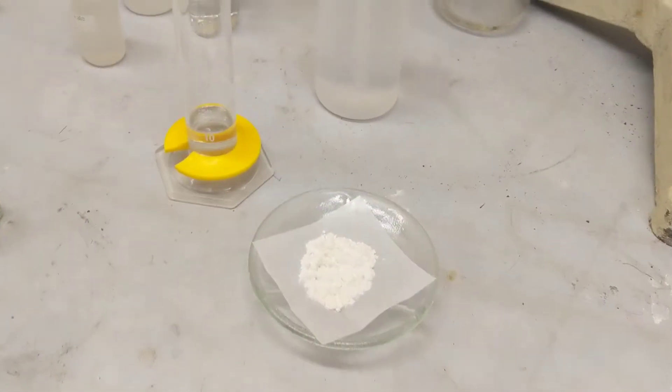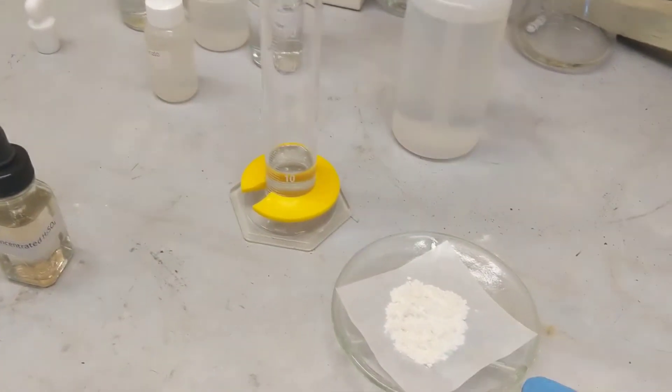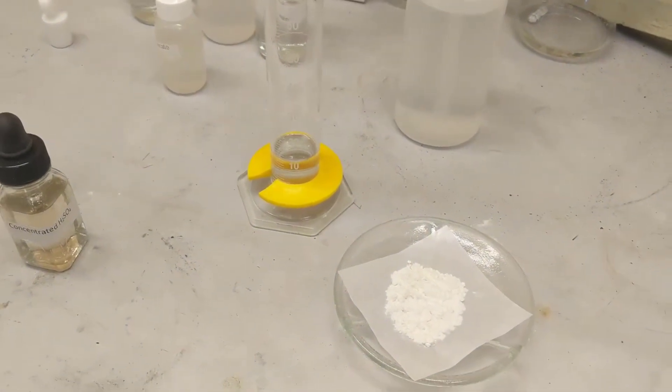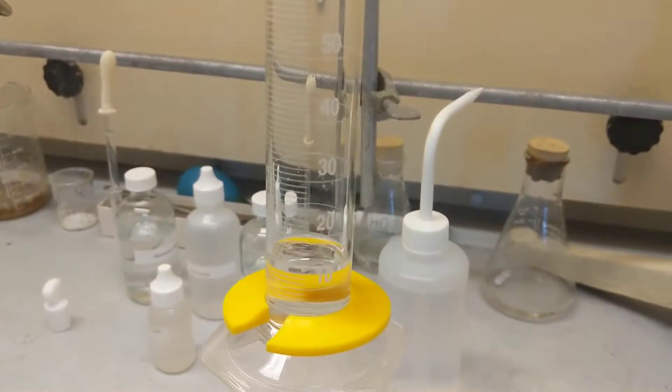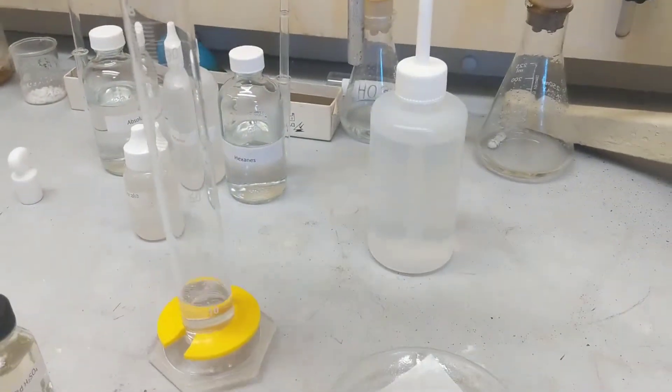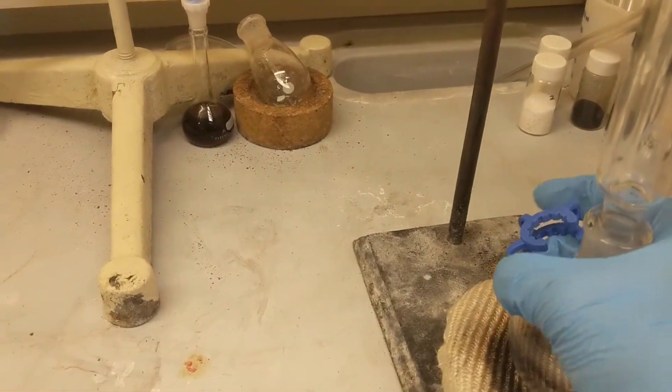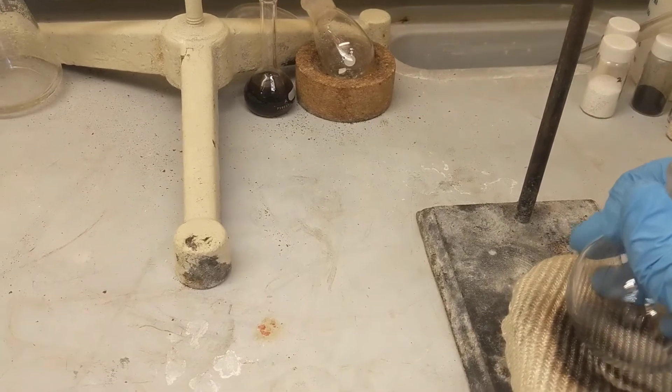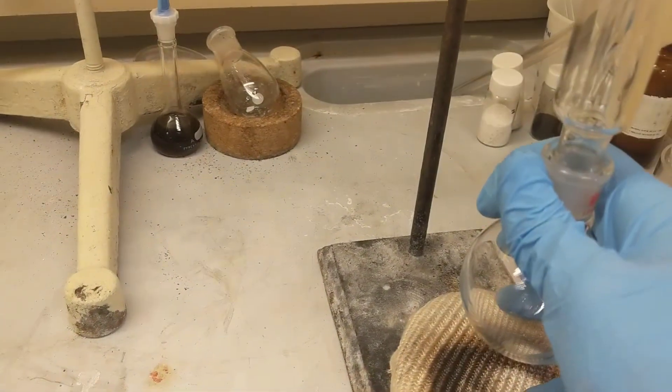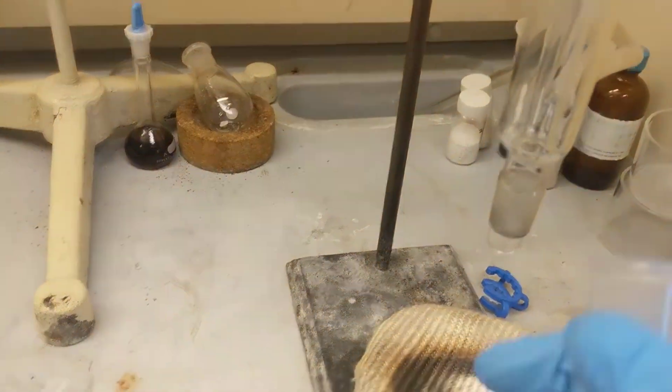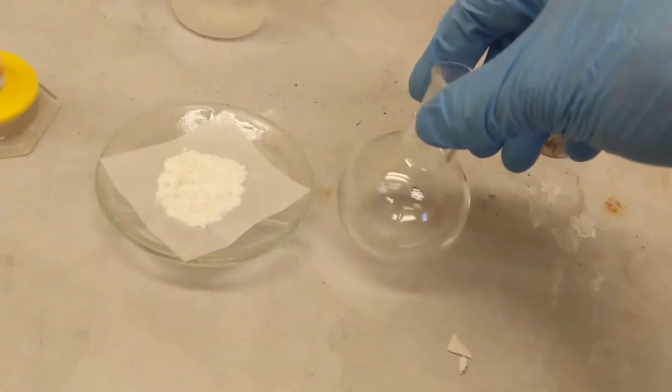As you can see here, I have my P-aminobenzoic acid right here. This is 1.2 grams approximately. I'll give you the exact measurements at the end of the experiment. This is 12 grams of absolute ethanol. I'm just going to add it into my 100 milliliter volumetric flask. I'm just going to do some maneuvering here. I'm just going to add those into here. I'll see you guys when that's done.